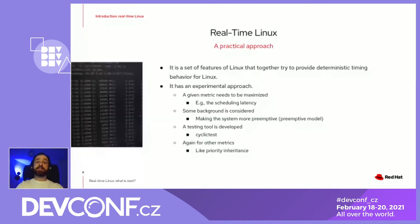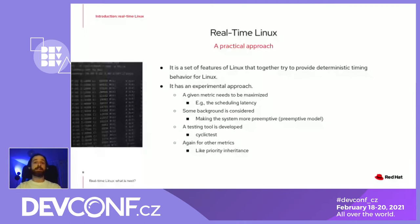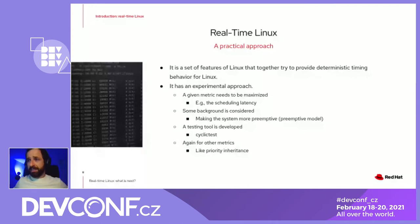Some background is generally considered: in theory, the preemptive model is a good thing for this, so we try to mimic that. And then some testing tools are generally developed, like the user-space testing tool cyclic test.